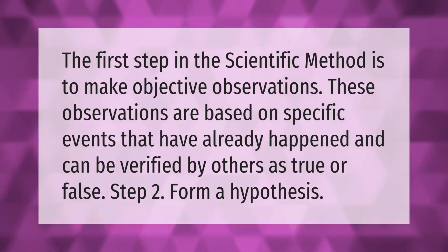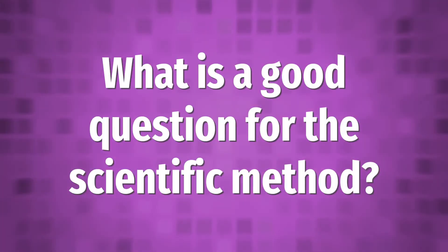The first step in the scientific method is to make objective observations. These observations are based on specific events that have already happened and can be verified by others as true or false. Step 2: form a hypothesis.